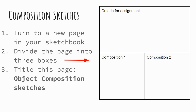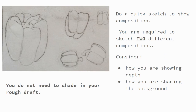In the composition boxes, you're going to draw something that looks a lot like this, except you're going to do two of them. You'll notice in bold it says at the bottom, you do not need to shade in your rough drafts. This is just going to show me that you understand how depth works and you have a kind of rough idea of where you're going to place these fruits and vegetables.